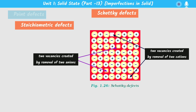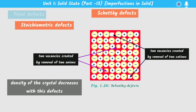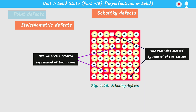The defect due to removal of the same amount of positive ions and negative ions is known as Schottky defect. In other words, the defect observed in ionic solids due to removal of equal numbers of positive and negative ions is called Schottky defect. Since ions are removed from the crystal, the density will decrease.